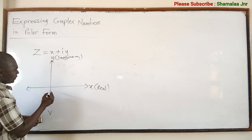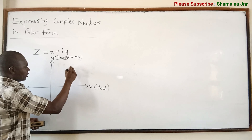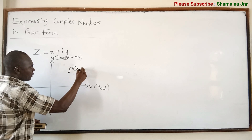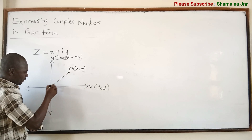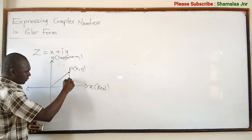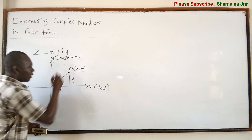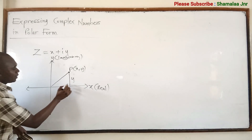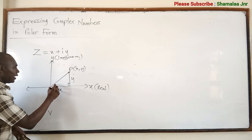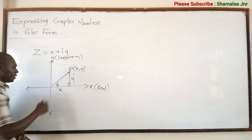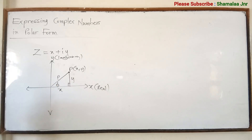Now you can represent the complex number as a point P with coordinates x and y. From here to here is x and from here to here is y. This forms a right-angled triangle — this angle is 90 degrees. Let's call the angle here phi and let's call the hypotenuse rho.